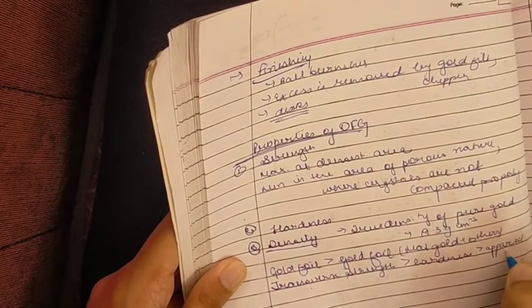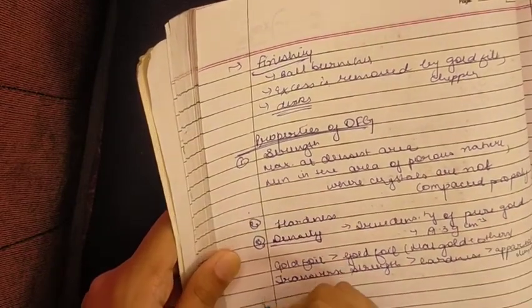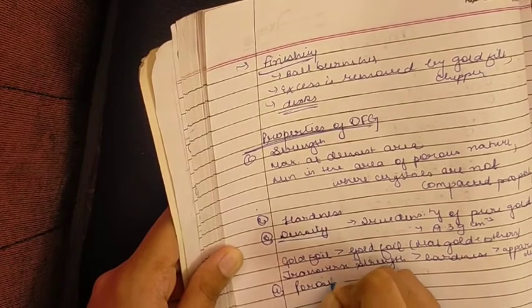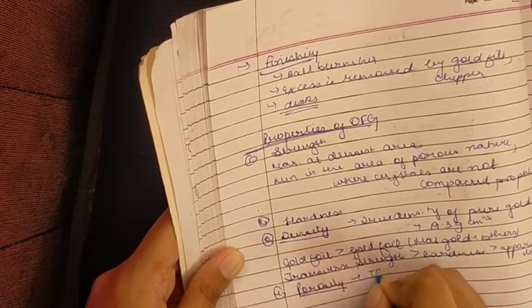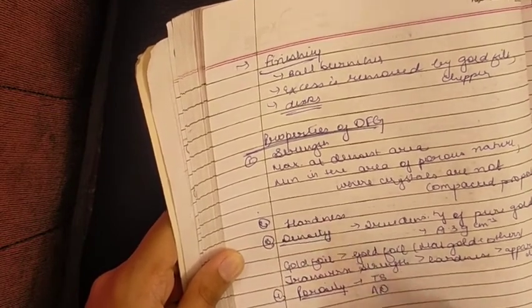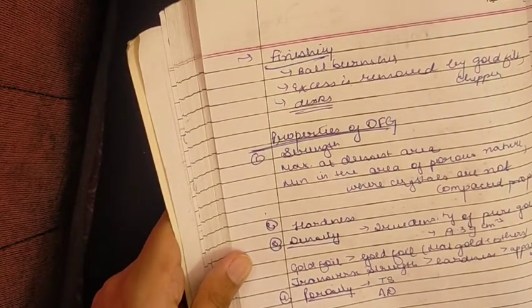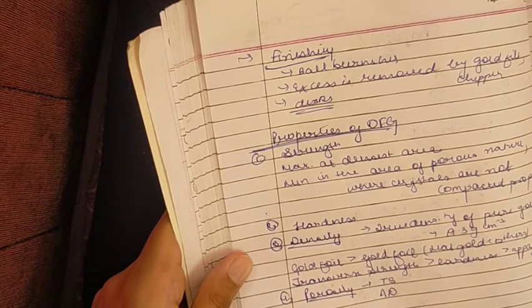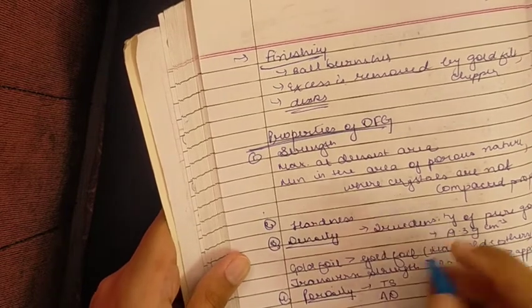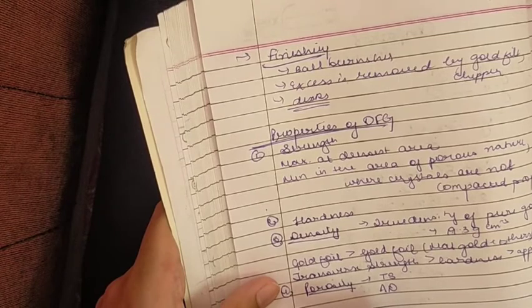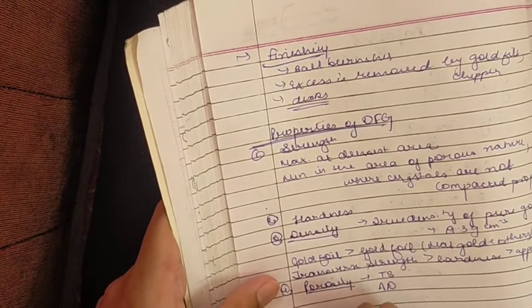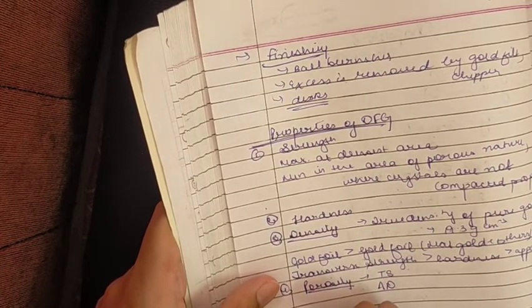Now, if you have to take an estimate of the porosity, it can be taken through transverse strength or apparent density. The porosity leads to a decrease in the hardness. This is a very important problem because most of the times it leads to tarnish and corrosion.